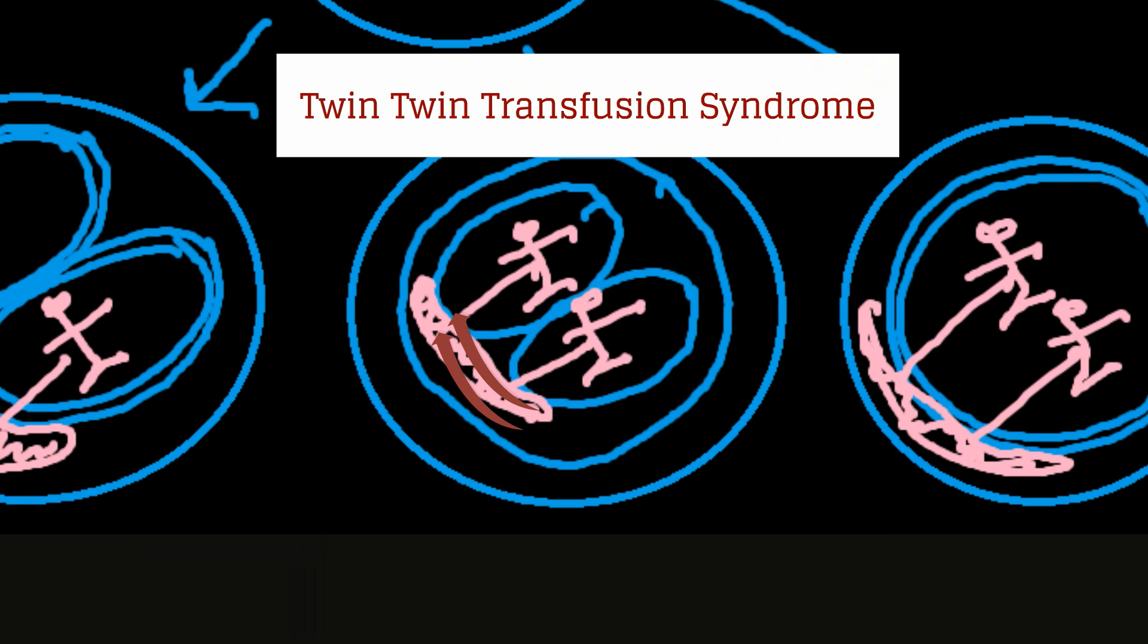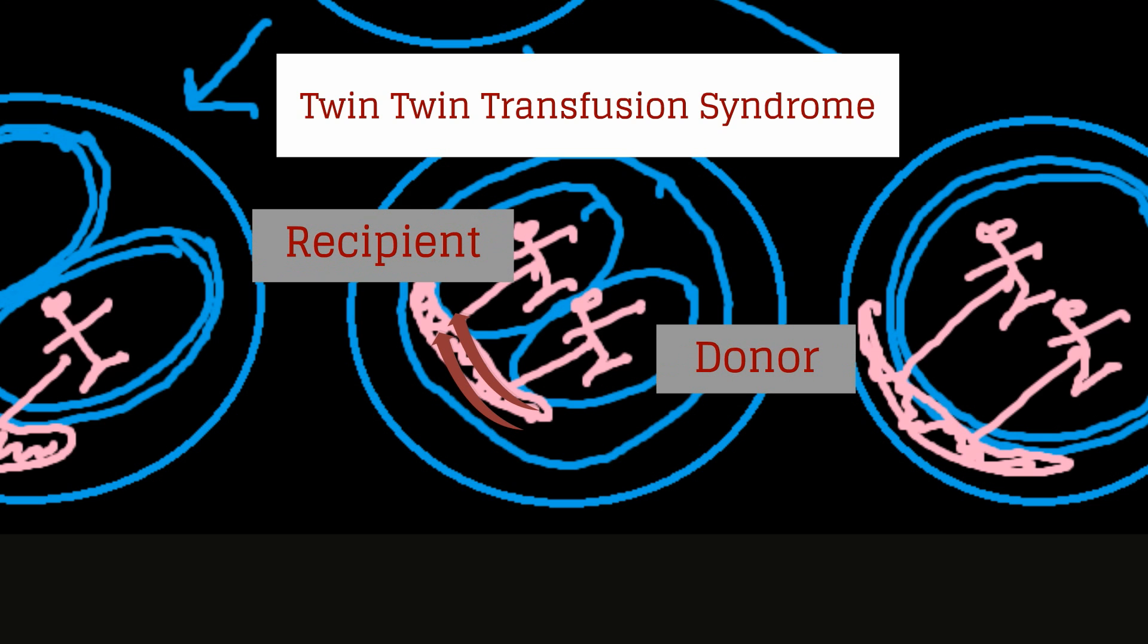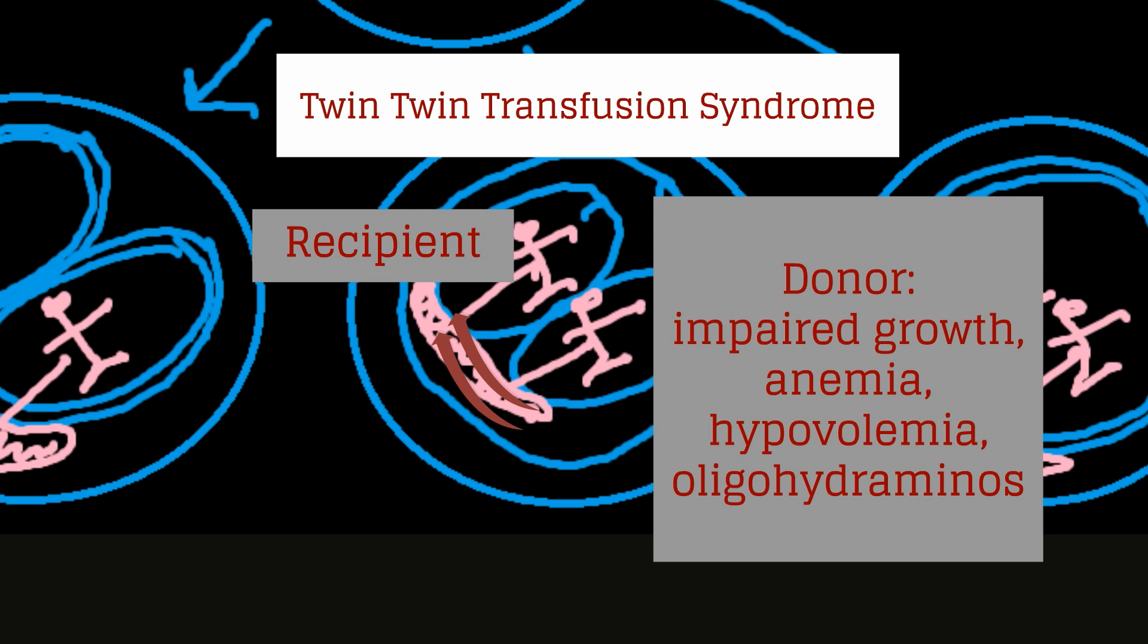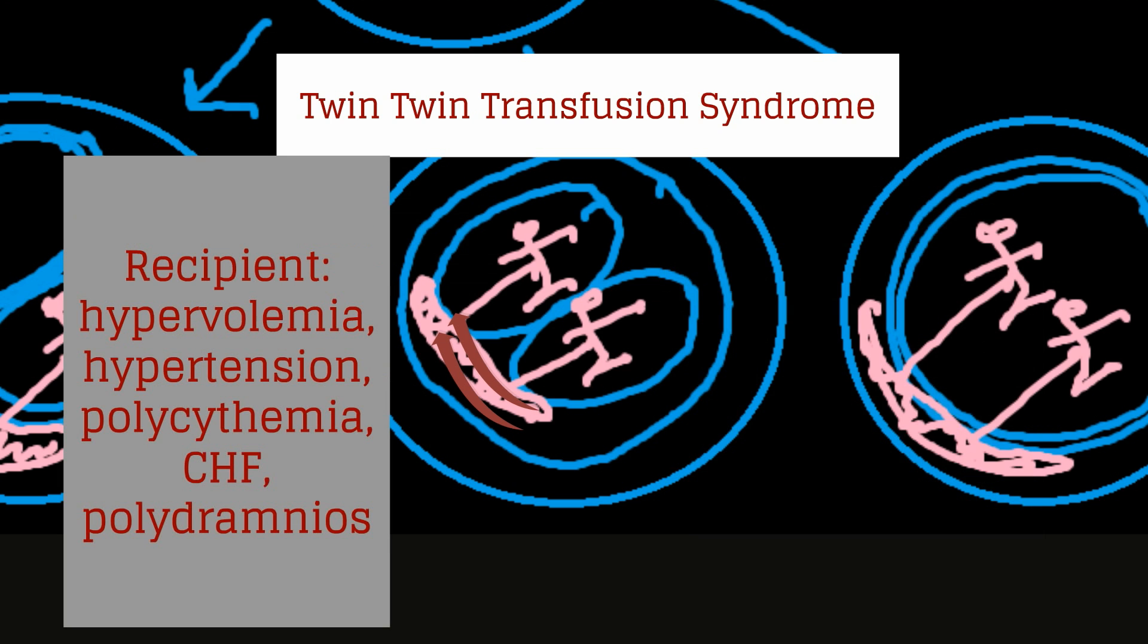This occurs when there is net flow from one twin to another, secondary to vascular anastomosis between the fetuses. There will be a donor twin and a recipient twin. The donor twin can have impaired growth, anemia, hypovolemia, oligohydramnios, and other problems. The recipient twin can develop hypervolemia, hypertension, polycythemia, congestive heart failure, and polyhydramnos.